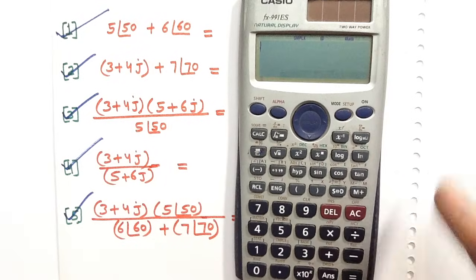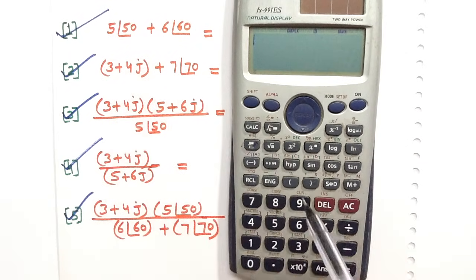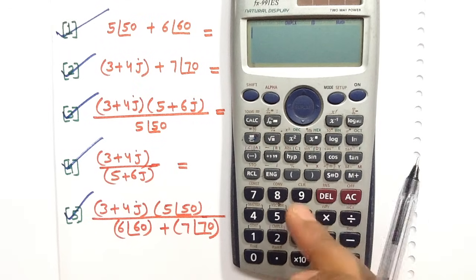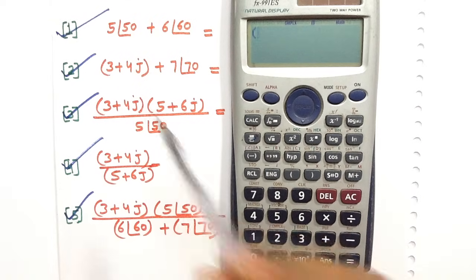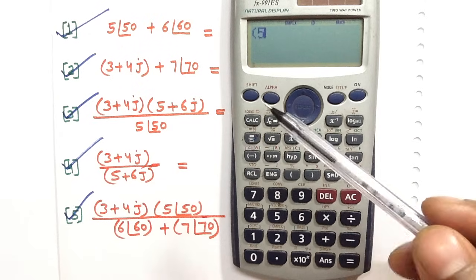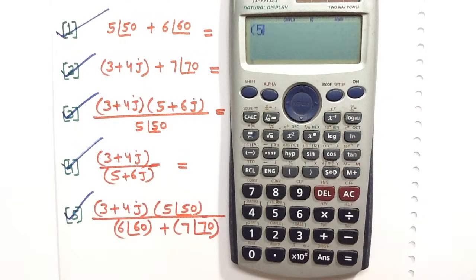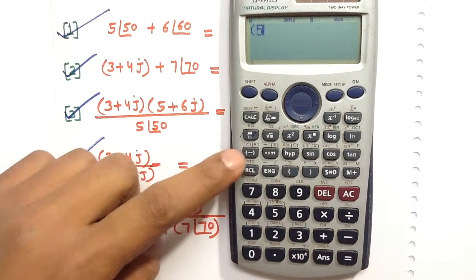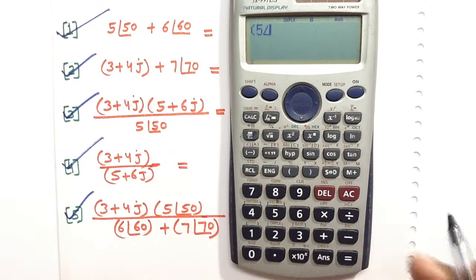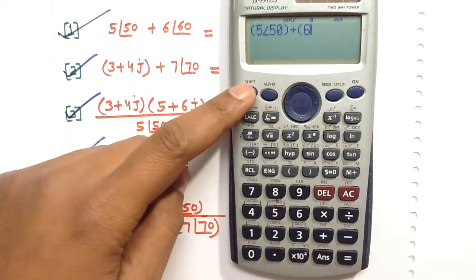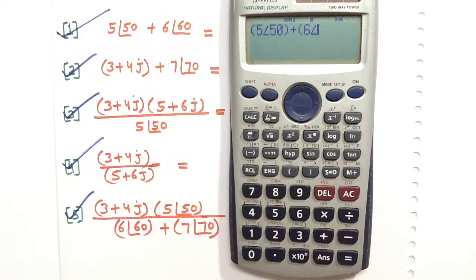The first problem is 5 angle 50 plus 6 angle 60. Write the whole equation on the calculator screen. Press bracket, then 5, then angle. To write the angle symbol, press Shift then the angle button, and write 50. In the same way, write the closing bracket, then 6, then angle, then 60.